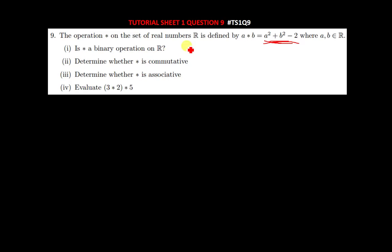Hence, star is a binary operation on the set of real numbers. To explain your answer, you say: since there is no real number we can replace in this expression that can make our operation undefined, therefore star is a binary operation on the set of all real numbers.